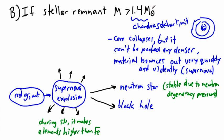which is 1.4 solar masses, then you end up with something very special. You get a supernova explosion, and then the result is either a neutron star or a black hole.